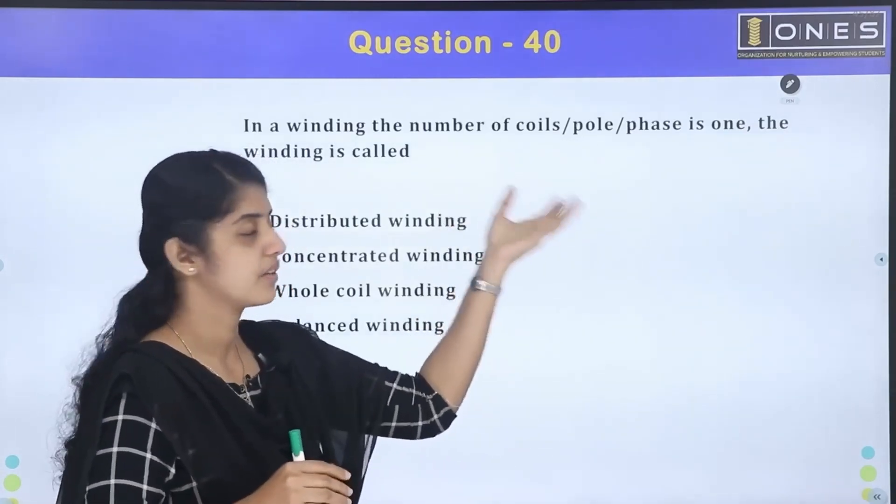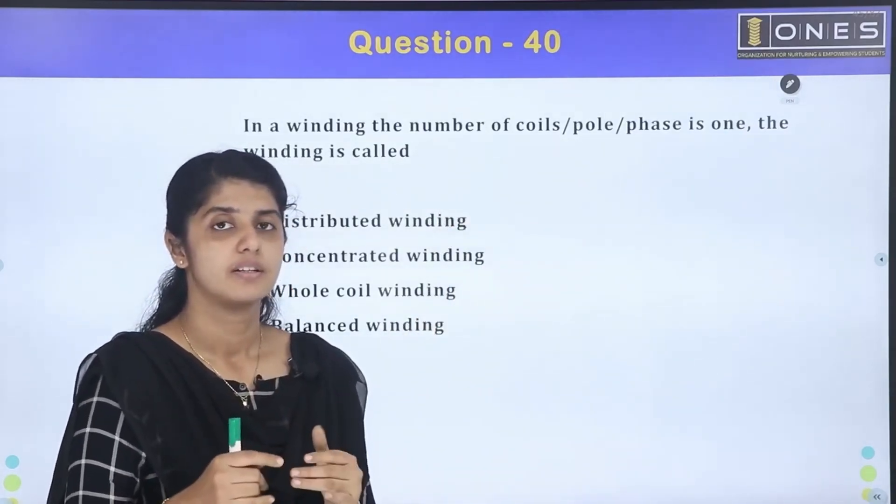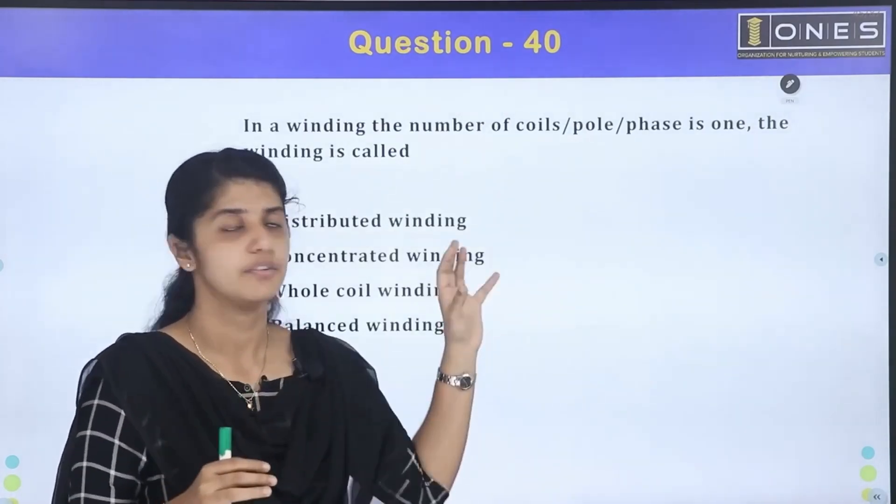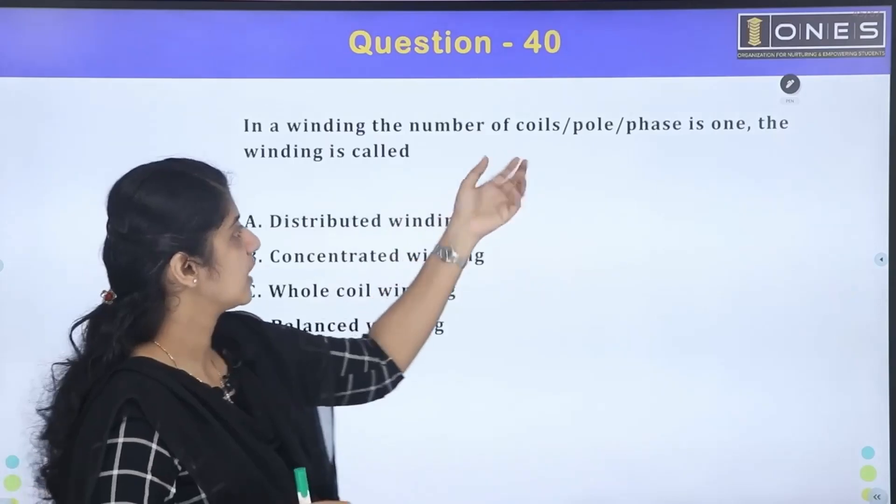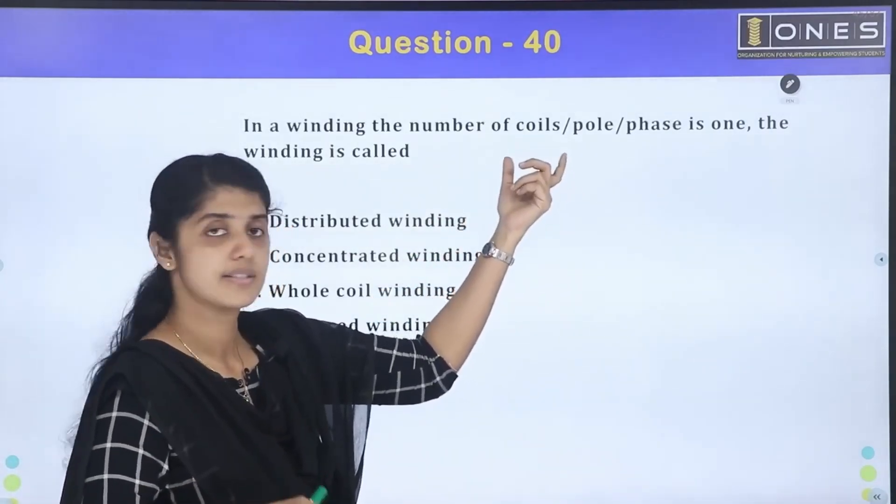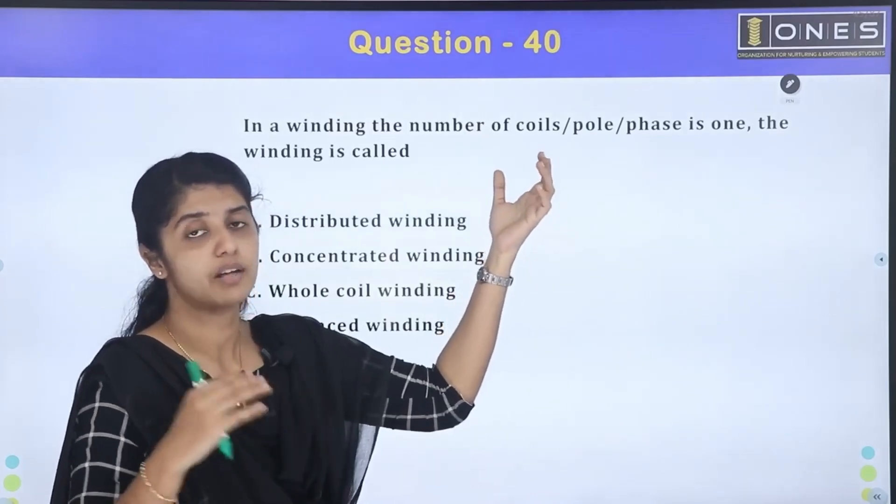Coils per poles per phase - this is a phase winding. This is a concept. Now, this is a four-phase machine. Coils per pole - one pole, one coil per pole, that is per phase. Three phase is R, Y, B.